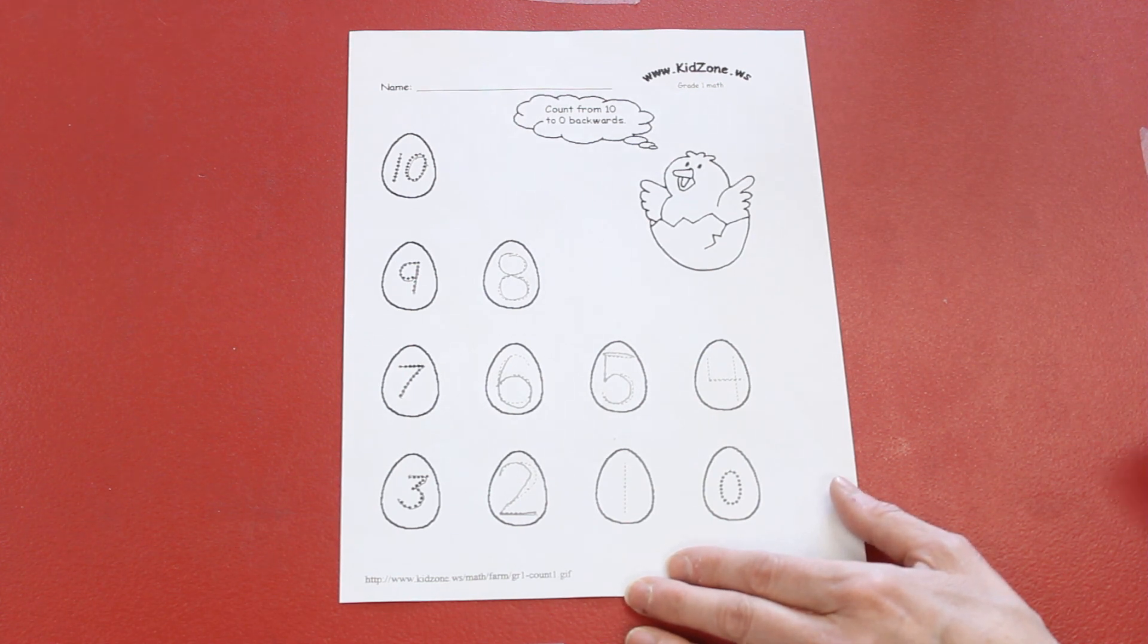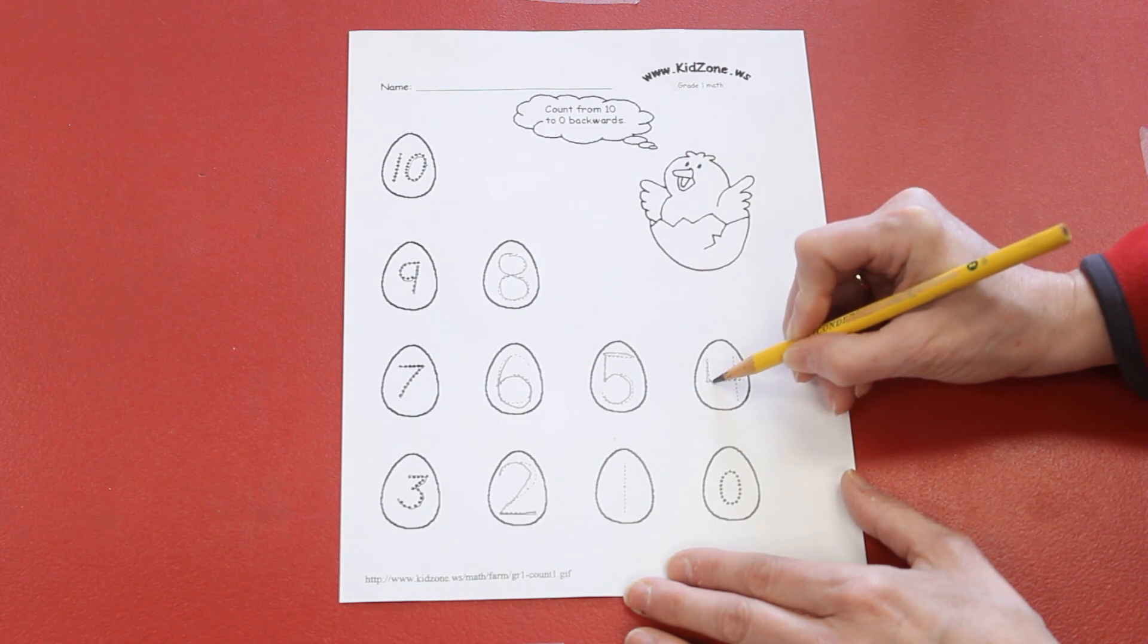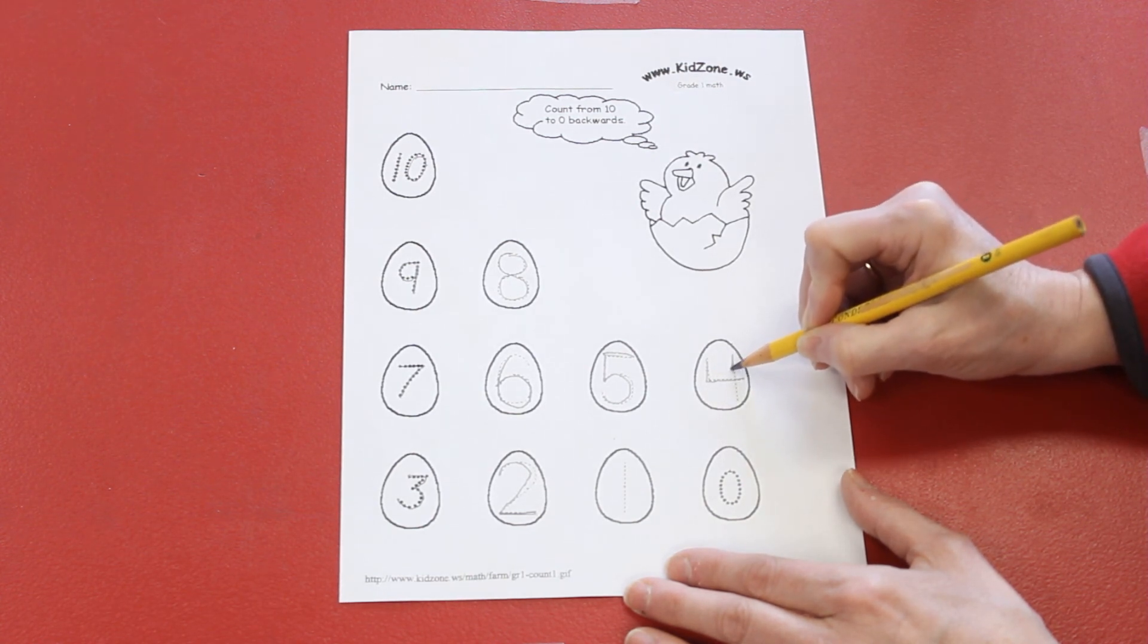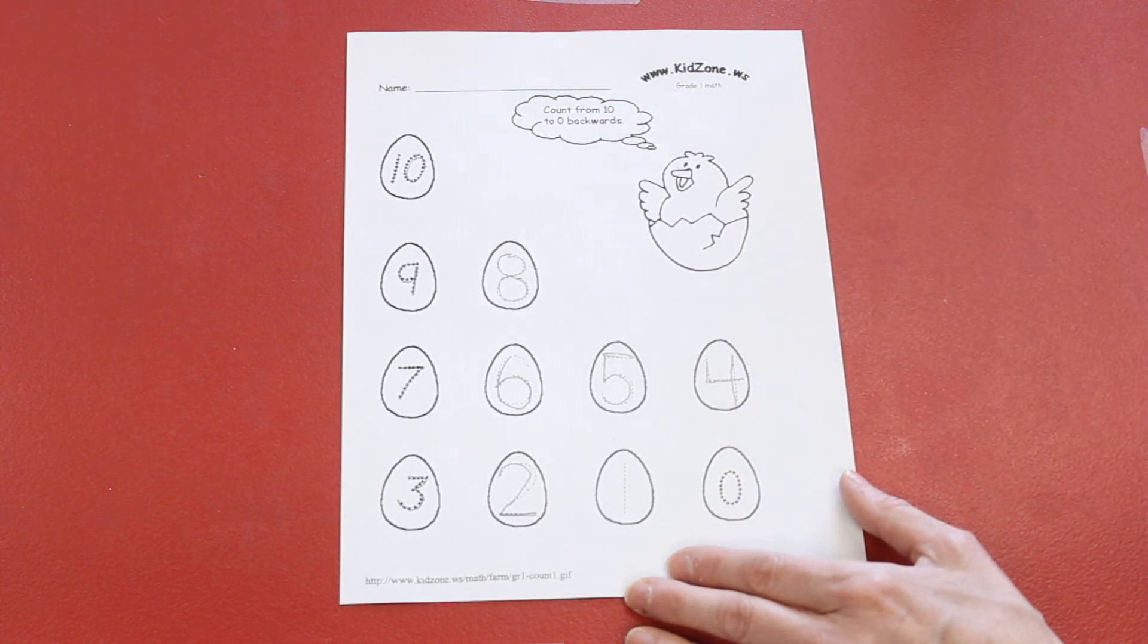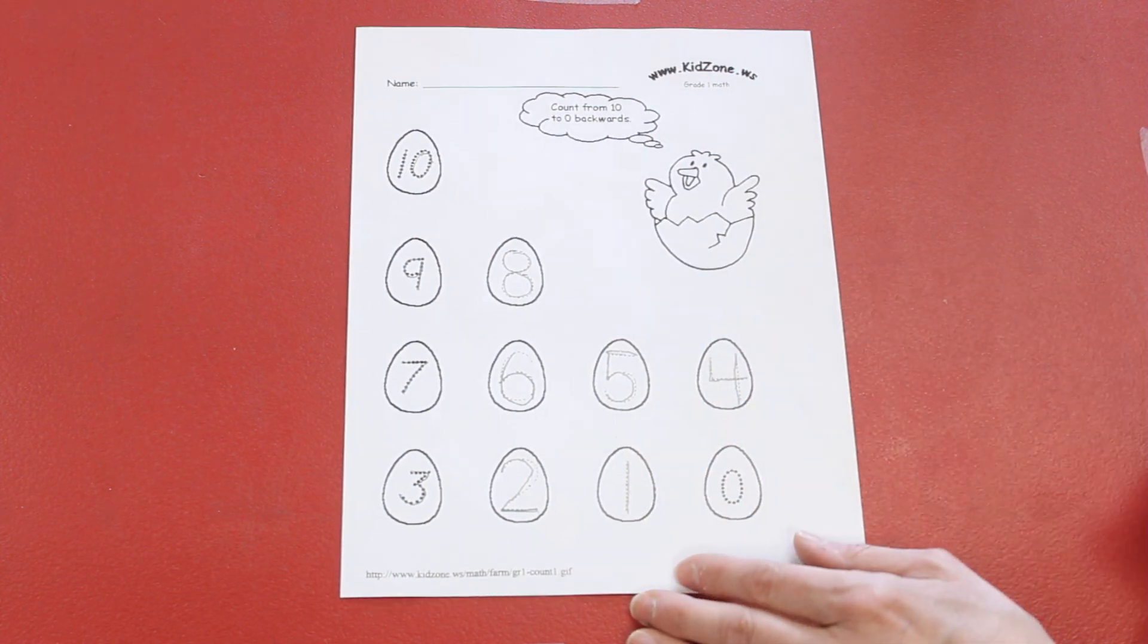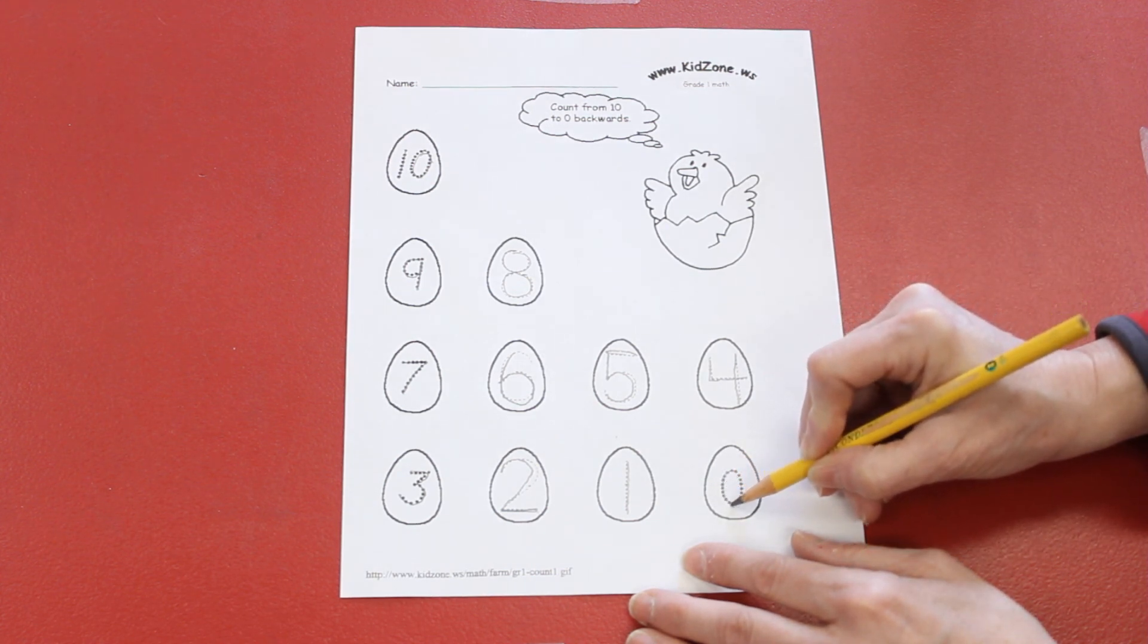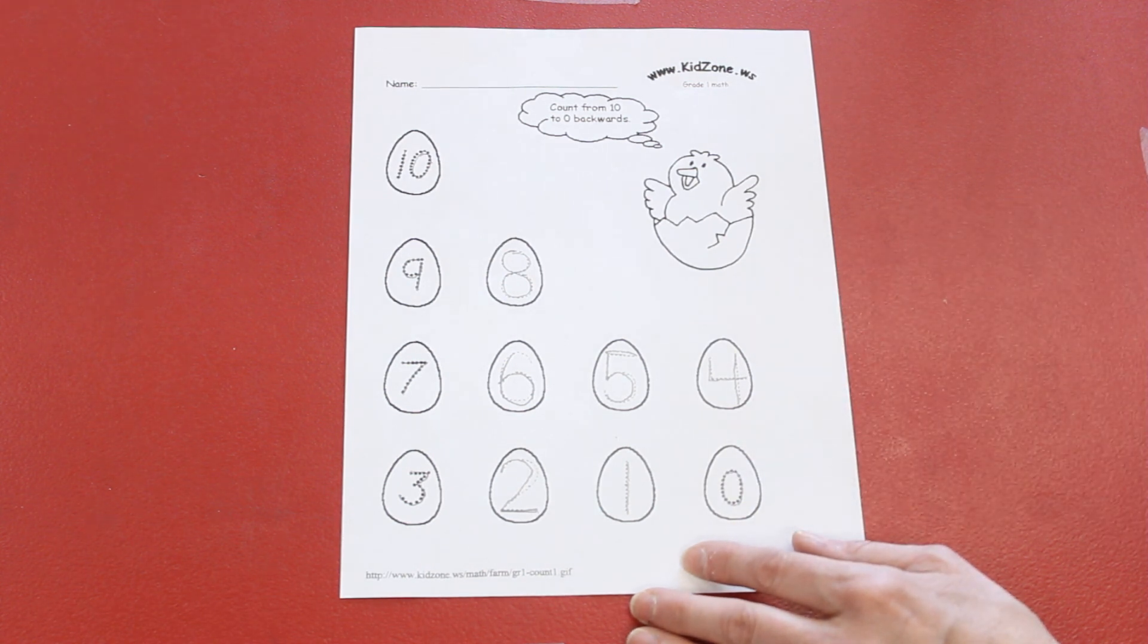Where's four? There it is. Start at the top, pull down, slide across, lift, come back up, and pull straight down. Oh, one is so easy, isn't it? Start at the top, pull straight down, and then let's do zero. Start at the top, circle around, and stop. Good.